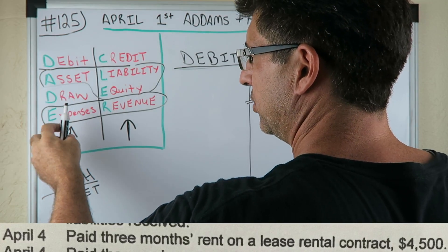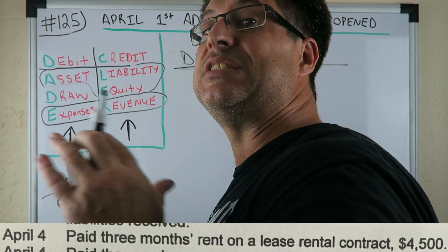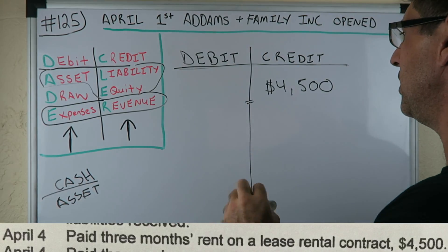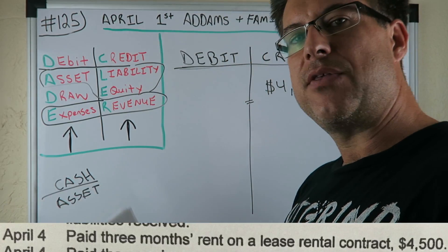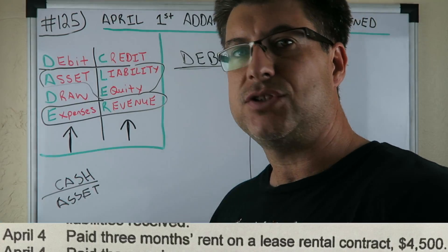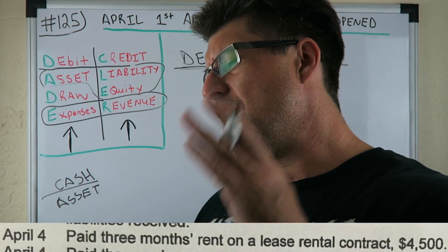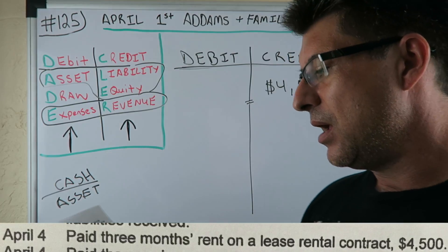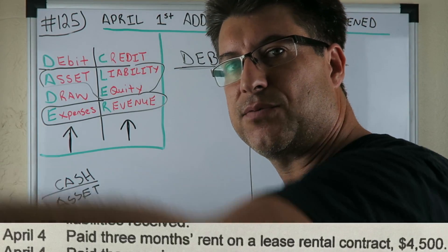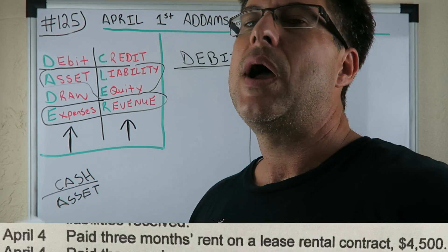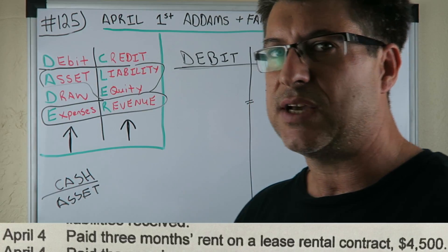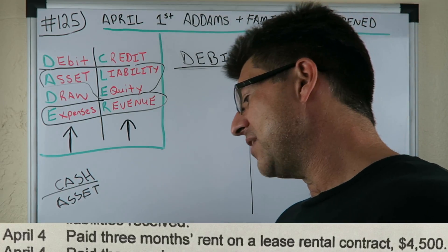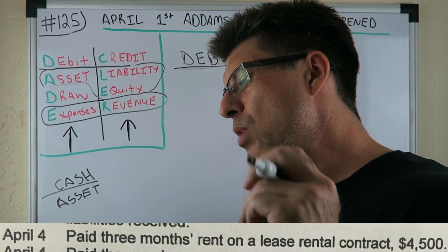Cash is an asset, and on DC ADE LER, if assets are decreasing you credit them — so we're going to credit cash for $4,500. Now we're doing the other half of the journal entry. There are two halves to every journal entry. It took me a long time to be able to break them apart, because paying three months rent for $4,500 always seemed like one thing.